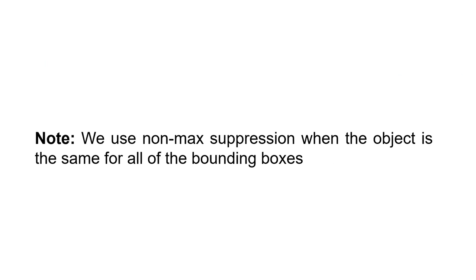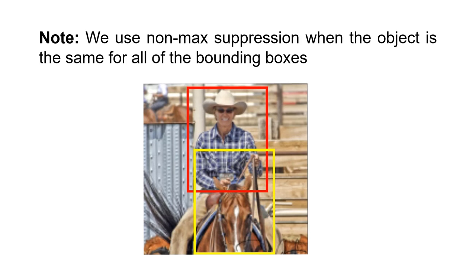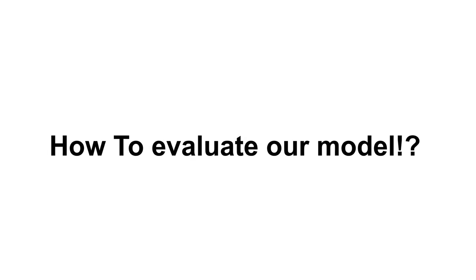Note, we use non-max suppression when the object is the same for all of the bounding boxes. To give you a better idea, let's imagine we have this image and these two bounding boxes. Even though they overlap, they are referring to different objects, and we shouldn't apply non-max suppression in this scenario. The next thing we have to understand is how to evaluate our model.